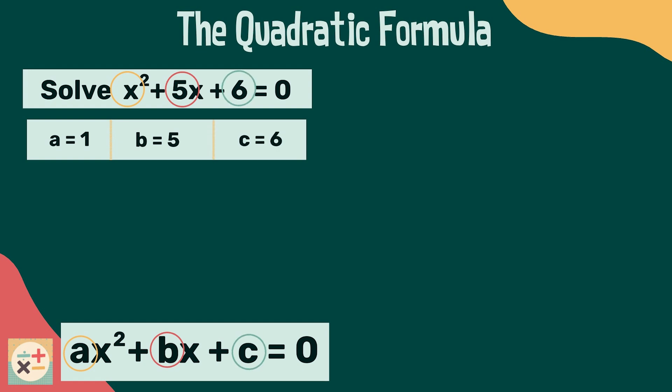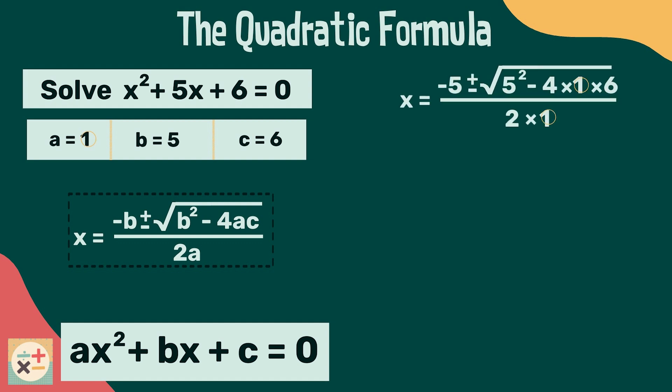Now let's substitute these values into the quadratic formula. For a refresher on substitution, see our video linked above or in the description below. We replace a with 1, b with 5, and c with 6.